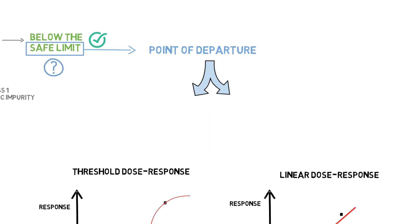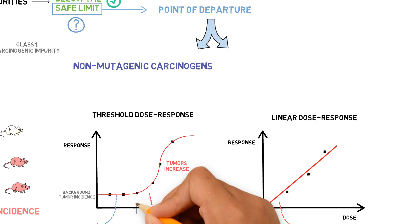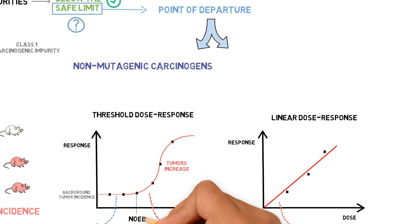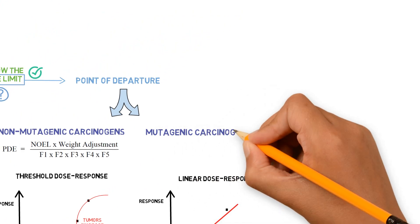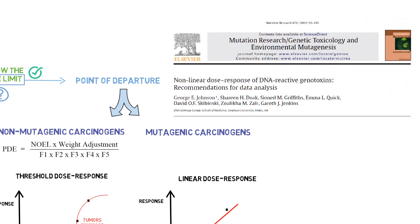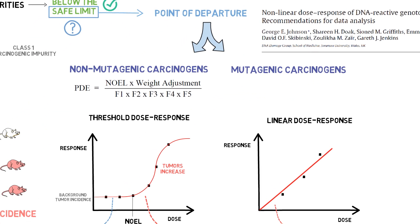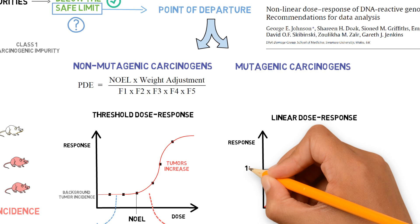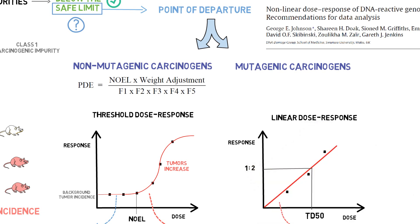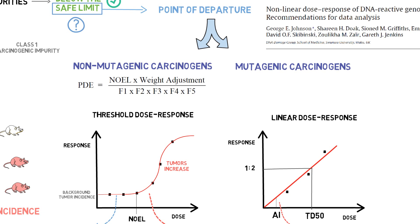This depends on which dose-response we have and the expected mode of action. For non-mutagenic carcinogens, we expect to have a threshold curve, so we can establish a no observed effect level (NOEL) and use this value to calculate a permissible daily exposure (PDE). For mutagenic carcinogens, although some may also show a threshold dose-response, the regulatory default approach has been to consider the curve as linear. In this case, we usually use the TD50 — the dose causing tumors in 50%, or one in every two animals — and then do a linear extrapolation to find the exposure corresponding to our acceptable intake (AI).